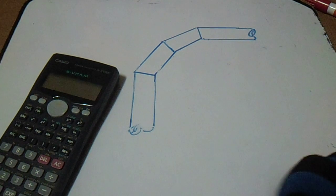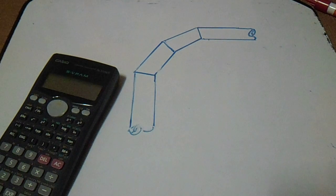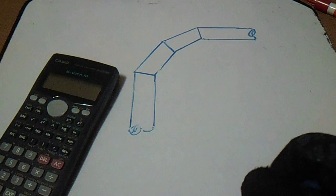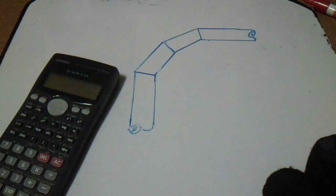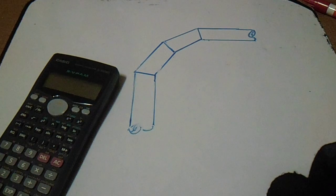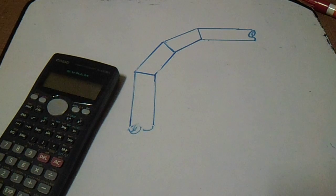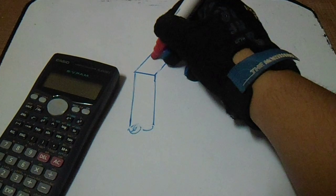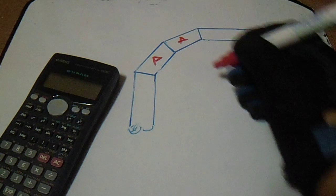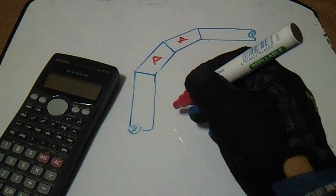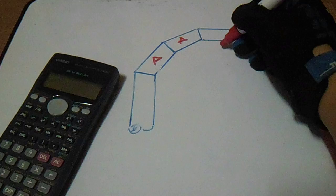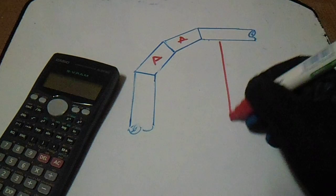Hi guys, welcome to the Piping, Welding and NDT channel. This is a four-piece 90-degree turn. We have a dimension A and we have a radius.